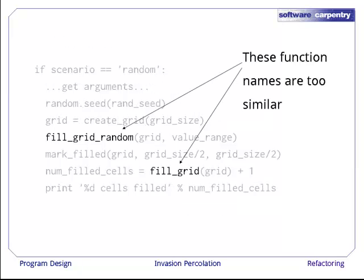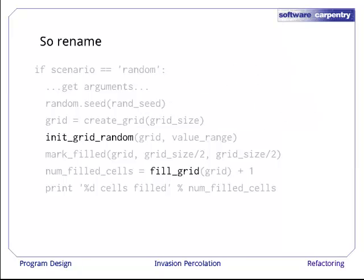The names of the functions fillGridRandom and fillGrid are very similar. It would be very easy for people to confuse them if the code was being read aloud. Let's rename the first one to initGridRandom. The functions that initialize the grid for specific test cases will then be called initGrid and the name of the test case.